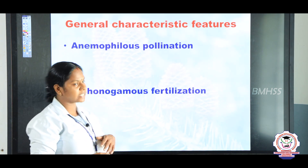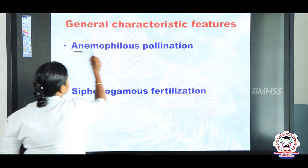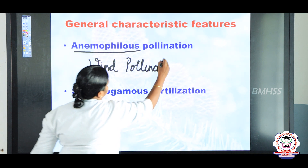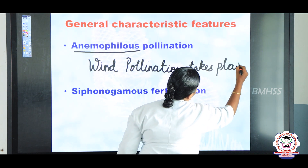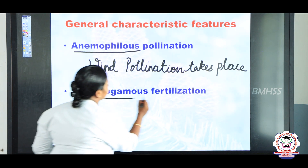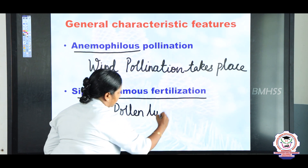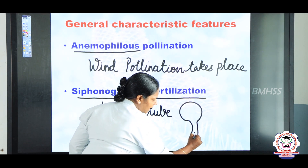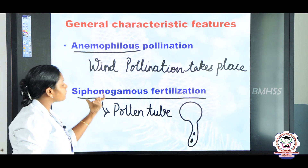We are going to see some other characteristics. Gymnosperms exhibit anemophilous pollination — 'anemophilous' means wind. Wind pollination takes place in gymnosperms. The next one is siphonogamous fertilization — 'siphonogamous' means fertilization takes place through the pollen tube. The pollen grain produces a pollen tube, and through it the male gametes are transferred to the ovule of the female.